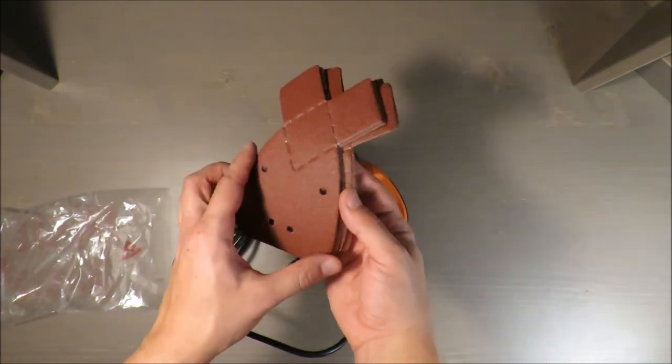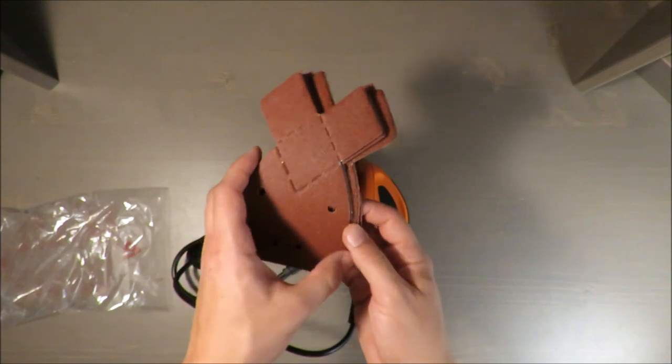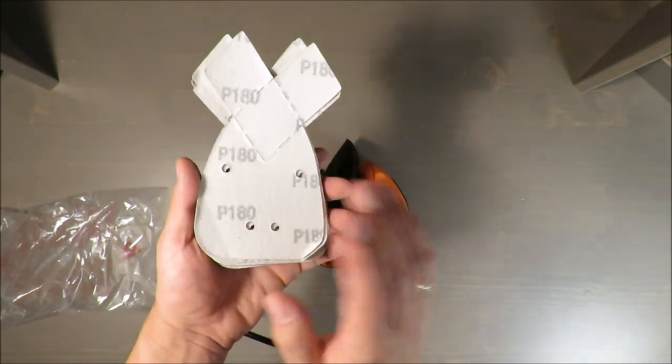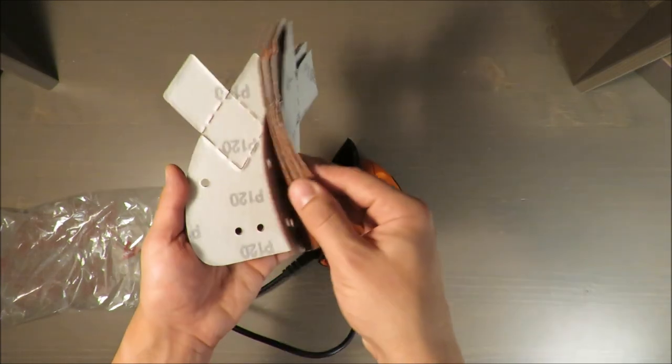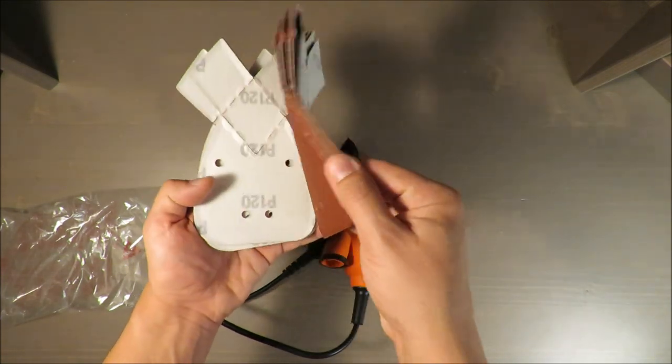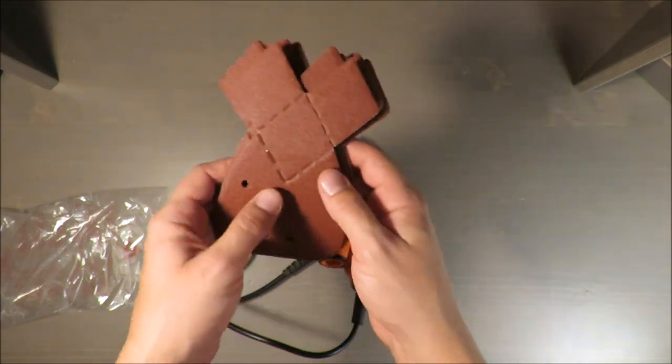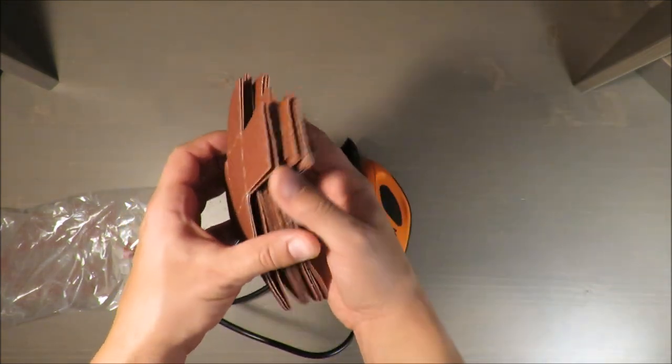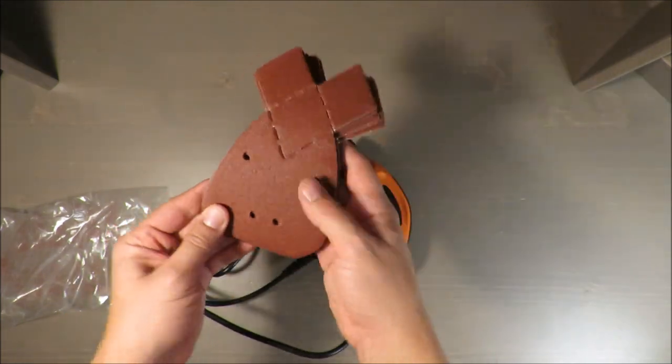Those are the sanding papers that I was mentioning before. As you can see, the biggest part attaches to the mouse grinder. The attached papers come with several grades, so you can straight away start making some DIY jobs.